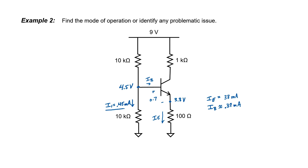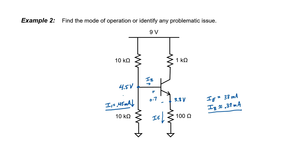Now let's compare this current with my base current. Is the base current negligible or not? Well no, it's not negligible, and that's problematic because it means that the 4.5 volts I have written at the base is not really correct. If the base current is not negligible, then the actual voltage at the base is going to be a lower number. In this situation, it's probably not low enough to drive the transistor into cutoff. This transistor is actually very likely in the saturation region.